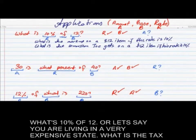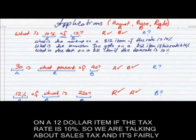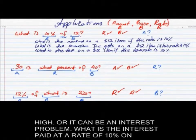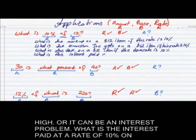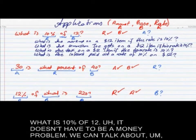Or let's say you're living in a very expensive state: what is the tax on a $12 item if the tax rate is 10%? So we're talking about sales tax. Or it can be an interest problem: what is the interest paid at a rate of 10% on $12? These are all questions that can be simplified to: what is 10% of 12.